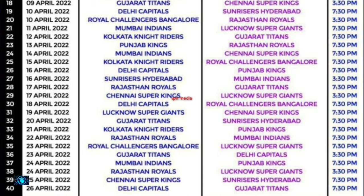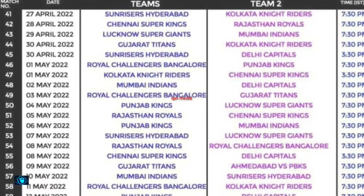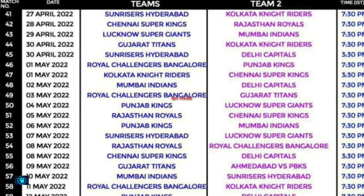April 26th: Delhi Capitals vs Gujarat Titans. April 27th: Sunrisers Hyderabad vs Kolkata Knight Riders. April 28th: Chennai Super Kings vs Rajasthan Royals. April 29th: Lucknow Super Giants vs Mumbai Indians. April 30th.